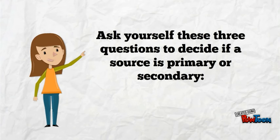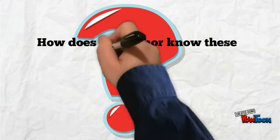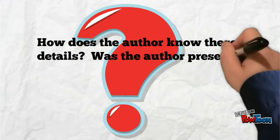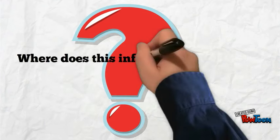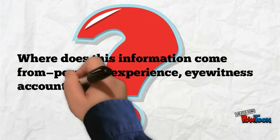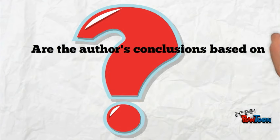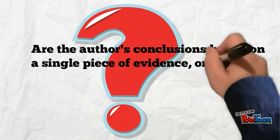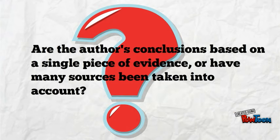Ask yourself these questions to decide whether a source is primary or secondary. How does the author know these details such as names, dates, and times? Was the author present at the event or soon on the scene? Where does this information come from — personal experience, eyewitness accounts, or reports written by others? Are the author's conclusions based on a single piece of evidence, or have many sources been taken into account — for example, diary entries along with third-party eyewitness accounts and newspaper accounts?